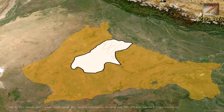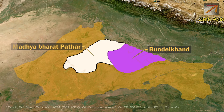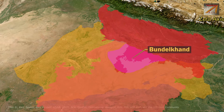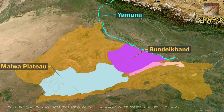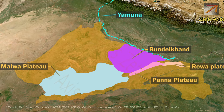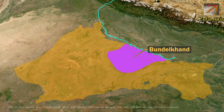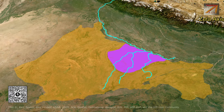The next important plateau of Central Highlands is the Bundelkhand Plateau, located to the east of Madhya Bharat Pathar, spread across southern Uttar Pradesh and northern Madhya Pradesh. It is bounded by the Yamuna in the north and northeast, Malwa Plateau in the south, Panna and Rewa Plateau in the southeast, and Madhya Bharat Plateau in the west. The Bundelkhand Plateau has an average elevation of 300 to 600 meters and slopes towards the northeast in the direction of the Yamuna, as seen in the flow of rivers over the plateau.